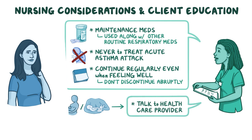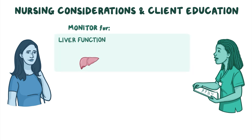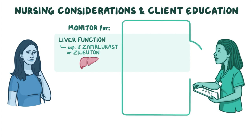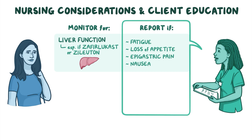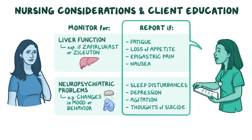While your client is taking a leukotriene modifier, periodically monitor their liver function, especially if they are prescribed zafirlukast or zileuton. Stress the importance of reporting any symptoms that may indicate liver problems, such as fatigue, loss of appetite, epigastric pain, or nausea. Also, closely monitor your client for neuropsychiatric problems like changes in mood or behavior, and teach them to report problems such as sleep disturbances, depression, agitation, or thoughts of suicide right away.